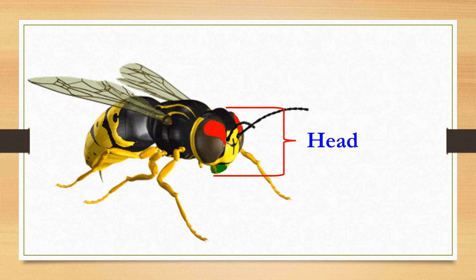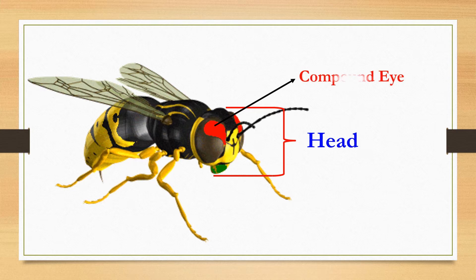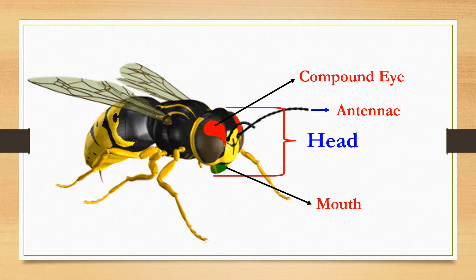Head: the main visible parts on the head are the large compound eyes, the antennae, feelers and the mouth parts.